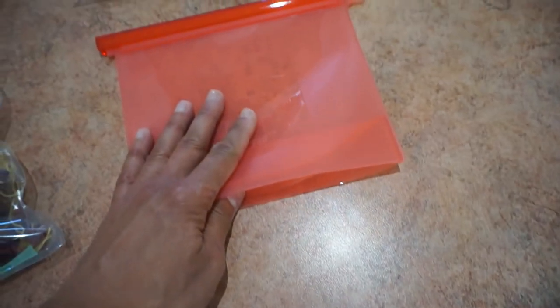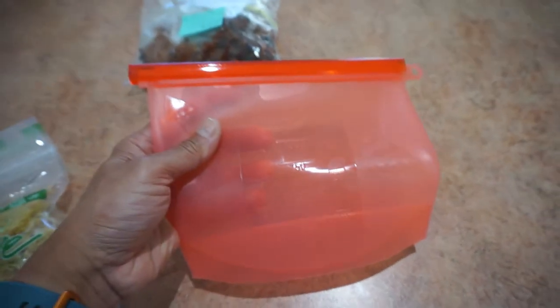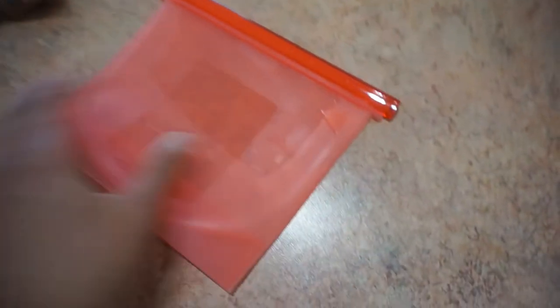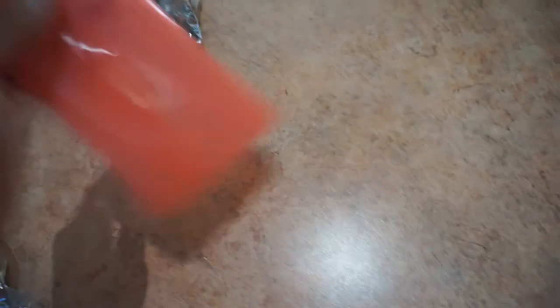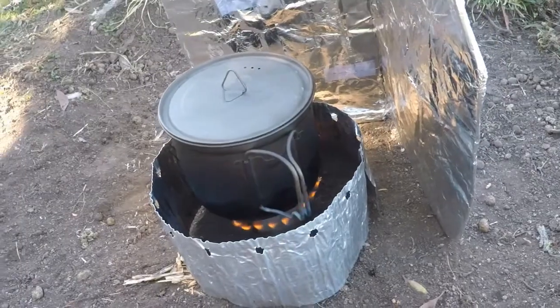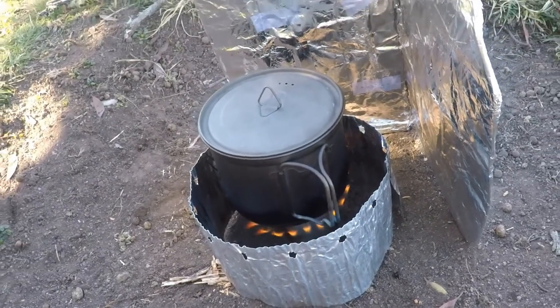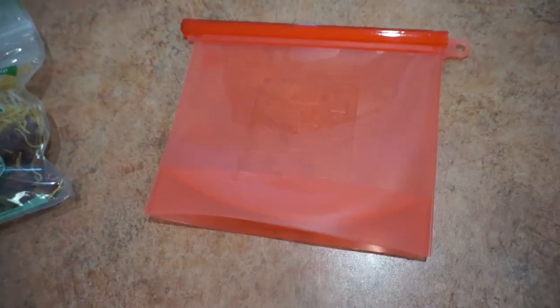So this is freezable, microwavable according to the manufacturer on eBay. So let's give it a go. Camping I'd normally boil the billy on the metho stove, but we're at home so I'll just use a kettle.